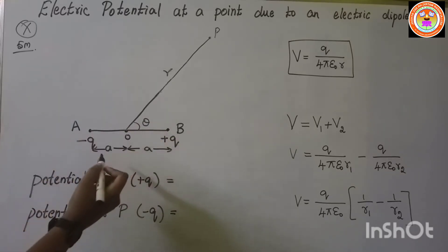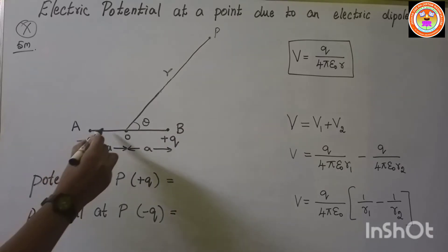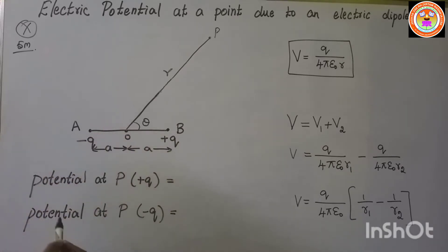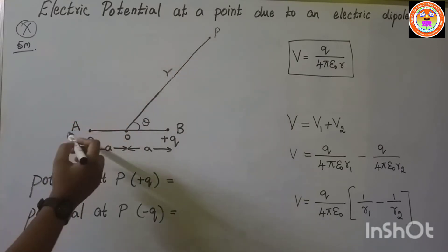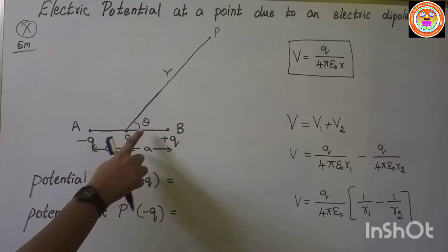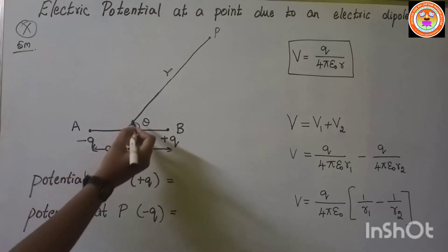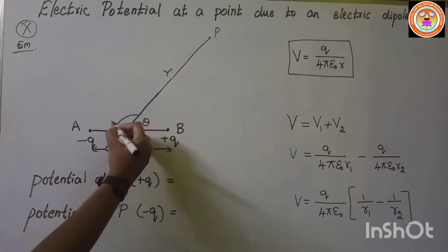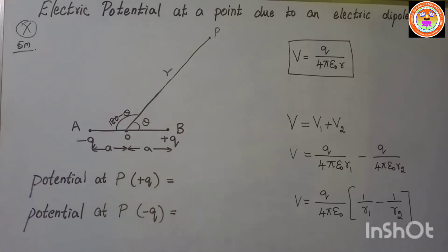For a straight line, the total angle is 180 degrees. The dipole is AB and the point P with respect to AB makes an angle theta. So the remaining angle on the other side is 180 minus theta.